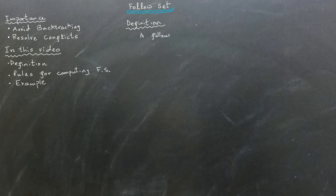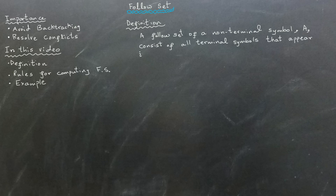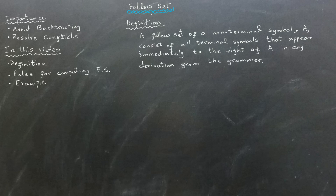Let's begin with the definition of a follow set. The follow set of a non-terminal symbol A consists of all terminal symbols that can appear immediately to the right of A in any derivation from the grammar. This means that unlike the first set, the follow set is determined solely for non-terminal symbols. To find the follow set for non-terminal A, we examine the right-hand side of the grammar's productions to see which terminal symbols can directly follow A.